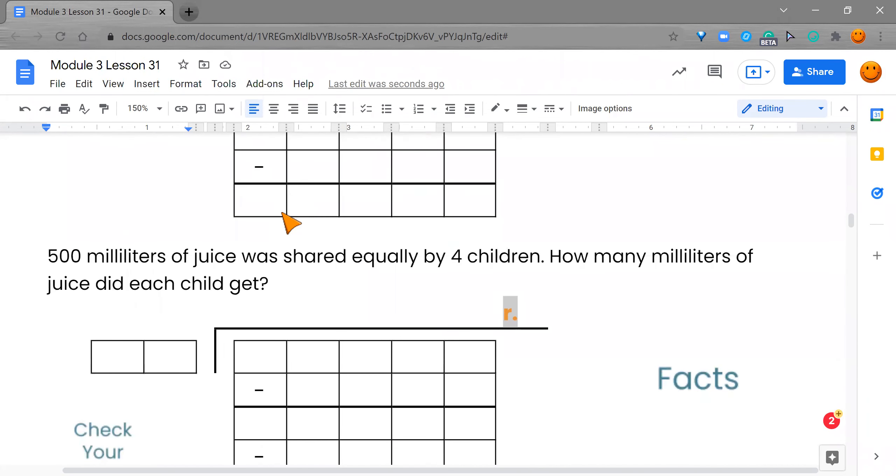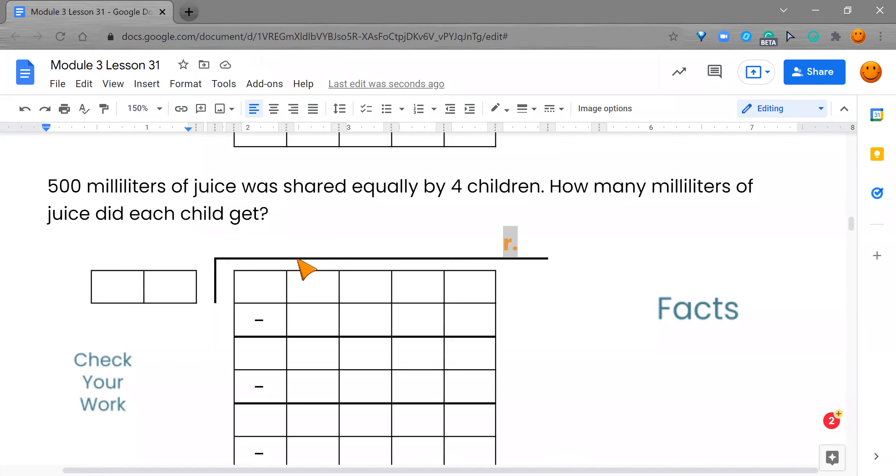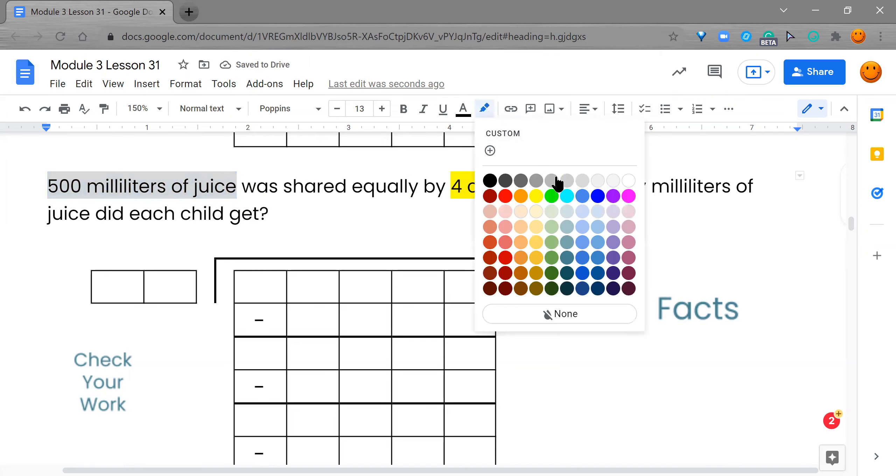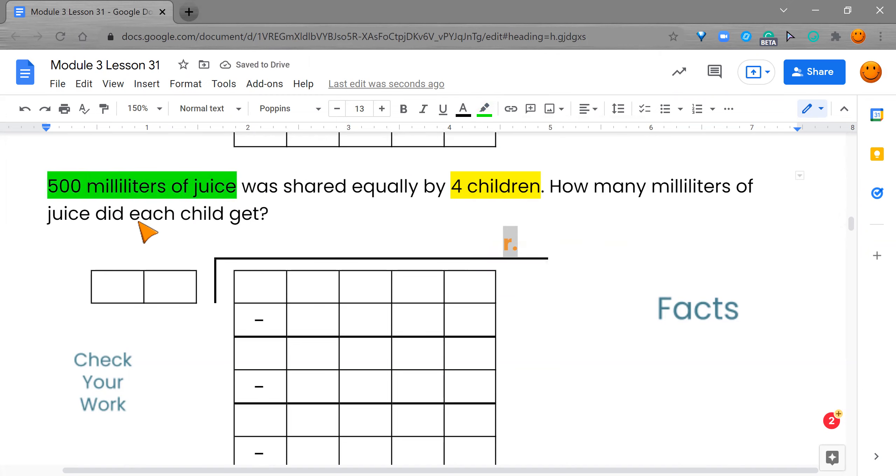Our next word problem. It says 500 milliliters of juice was shared equally by four children. How many millimeters of juice did each child get? Oh, so I'm going to look. It looks like this is important. This looks like it's my divisor. And then this over here, right here, this looks like it's my dividend. Because this is telling me how much we have all together. So right here, I'm going to write my four. And then right here, I'm going to write 500. Okay, that works. It looks like I need to know my facts.